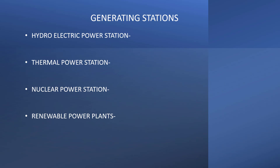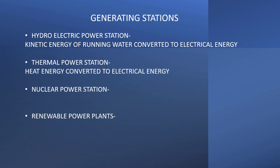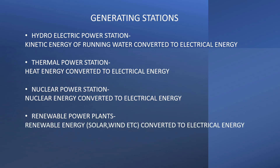Electricity is generated in power plants where some form of energy is converted to electrical energy. In a hydroelectric power station, kinetic energy of running water is converted to electrical energy. In a thermal power plant, heat energy is converted to electrical energy. In a nuclear power station, nuclear energy is converted to electrical energy. In renewable power plants, solar and wind energy are converted to electrical energy.